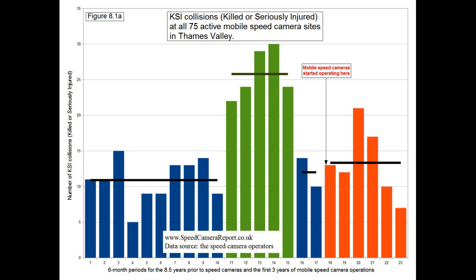What really stands out is that huge bump in the data, colored green. At the start of that period, collisions suddenly increased, and then at the end, suddenly dropped back down again. Something caused that bump, and we know that it was nothing to do with the speed cameras, because all of it occurred long before they arrived.